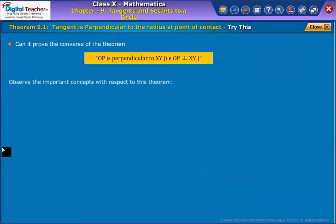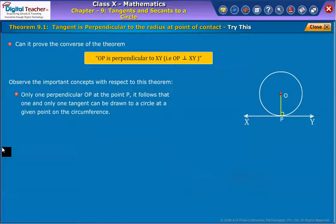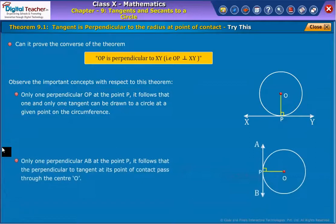Observe the important concepts with respect to this theorem. Only one perpendicular OP at the point P, it follows that one and only one tangent can be drawn to a circle at a given point on the circumference. Only one perpendicular AB at the point P, it follows that the perpendicular to tangent at its point of contact passes through the center O.